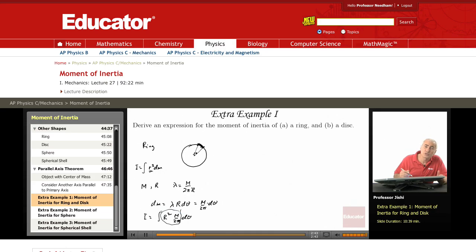From 0 to 2 pi for the ring. So just 2 pi. So r square m over 2 pi, 2 pi. So just m r square.